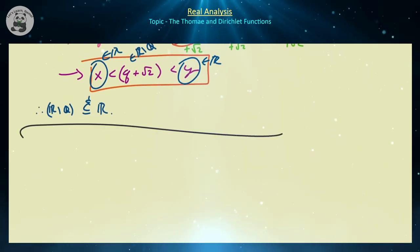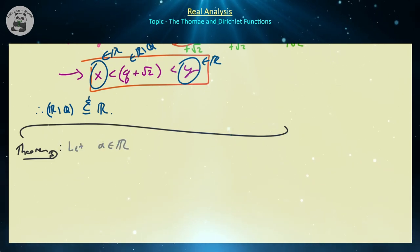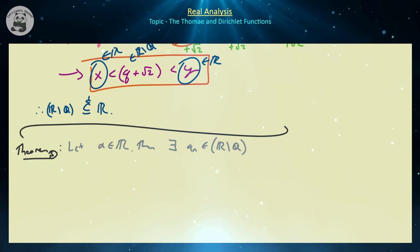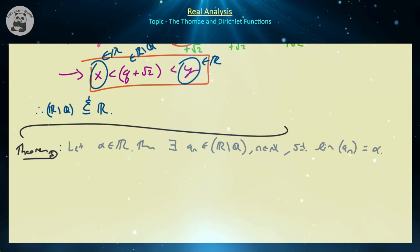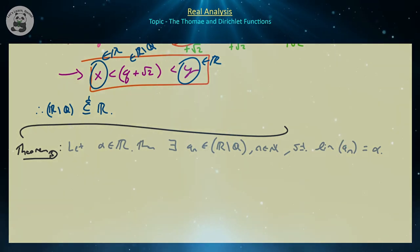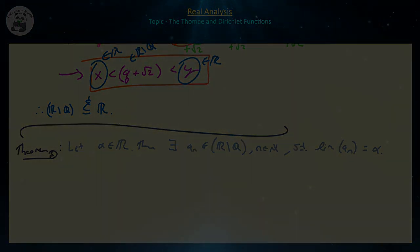Another very useful theorem that completes the story: let alpha be an arbitrary real number. Then there exists a sequence of irrational numbers such that the limit of this irrational sequence equals alpha. The proof follows the same strategy as before, now premised on R\Q being dense in R, just as the rational case was premised on Q being dense in R.